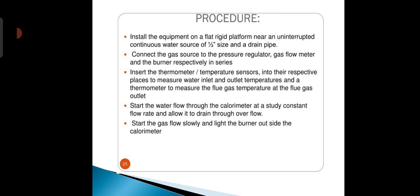Next, the procedure. Install the equipment on a flat rigid platform near an unobstructed continuous water source of 1.5 inch size and drain pipe. Connect the gas source to the pressure regulator, the gas flow meter, and the burner respectively in series.